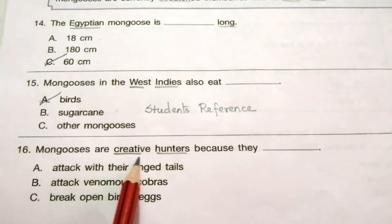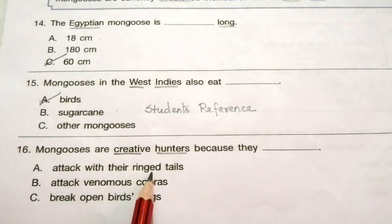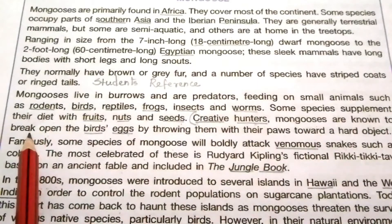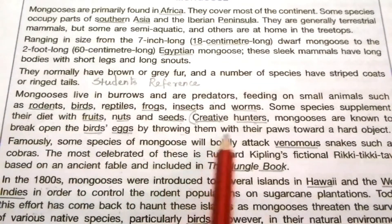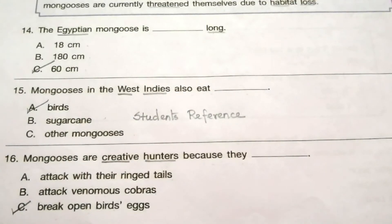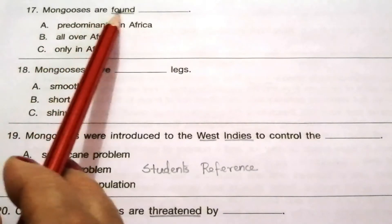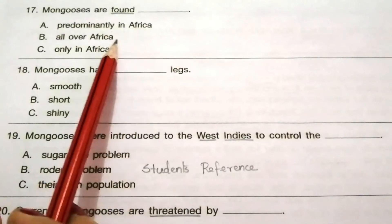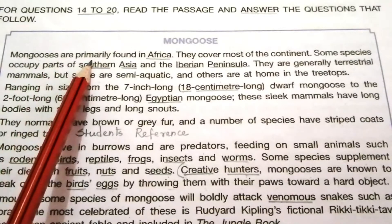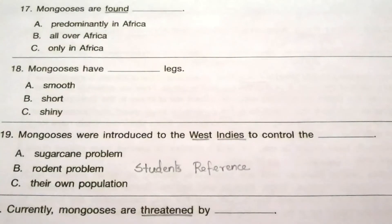Question 16: Mongooses are creative hunters because they — A) attack with the ringed tails, B) attack venomous cobras, C) break open birds' eggs. The answer is given in the passage — mongooses are known to break open birds' eggs by throwing them toward a hard object. So the answer is C — break open birds' eggs. Question 17: Mongooses are found — A) predominantly in Africa, B) all over Africa, C) only in Africa. The answer from the passage is 'primarily found in Africa.' So the answer is A — predominantly in Africa.